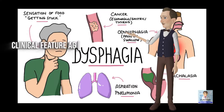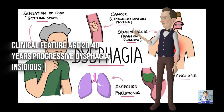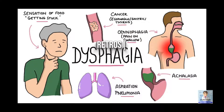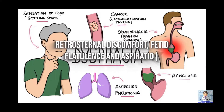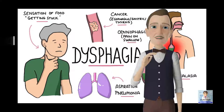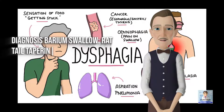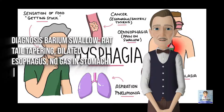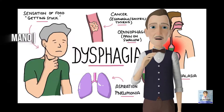Clinical features: age 20–40 years, progressive dysphagia with insidious onset, regurgitation, retrosternal discomfort, fetid breath, flatulence, and aspiration pneumonitis. Diagnosis: barium swallow shows rat-tail tapering, dilated esophagus, and no gas in the stomach. Also: esophagoscopy and manometry.